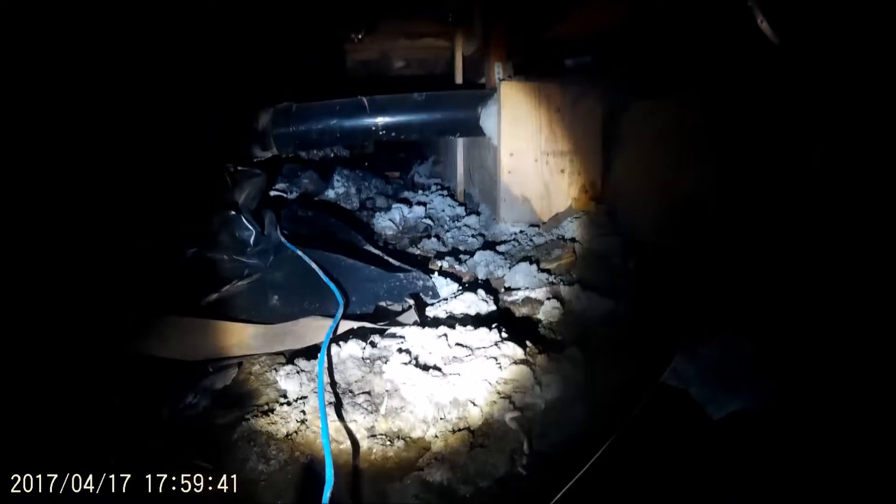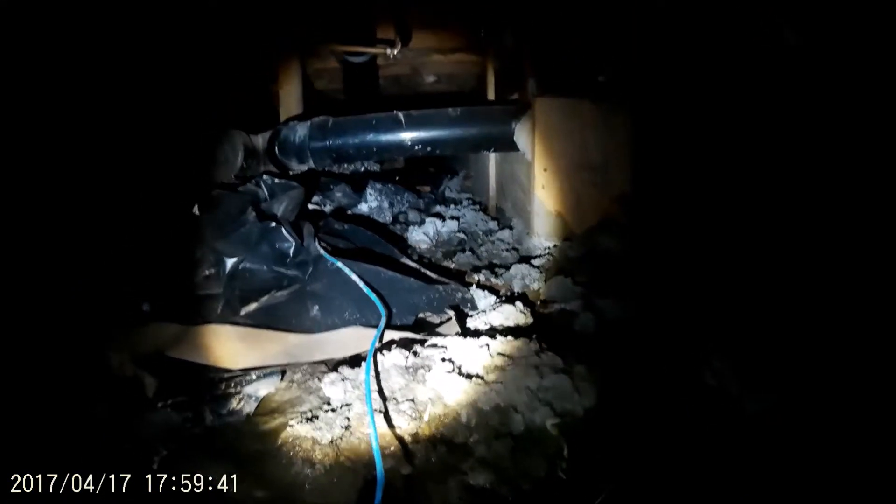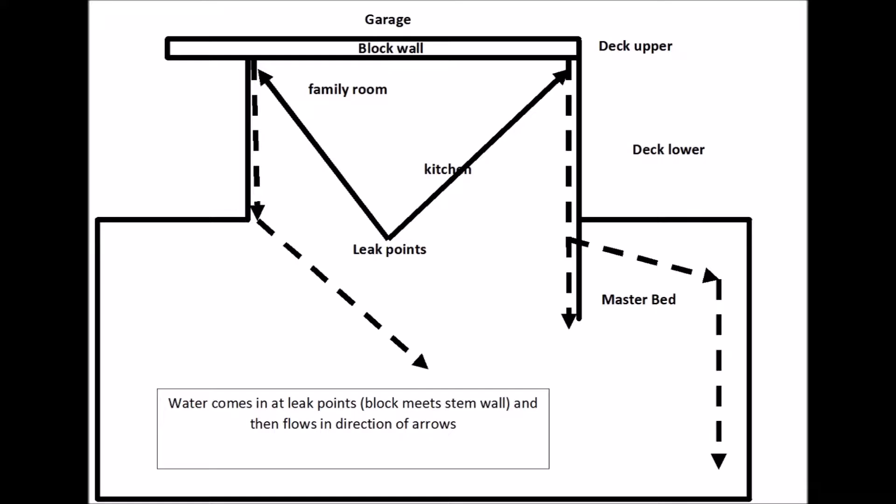Where the two leak points are, there's actually an indentation underneath the house. Water flows from left to right, following the path all the way to that corner where you crawl in.